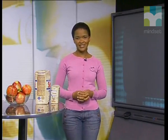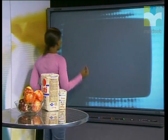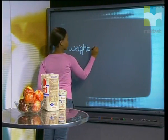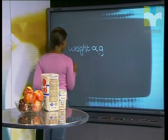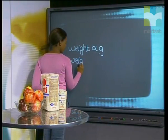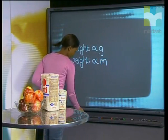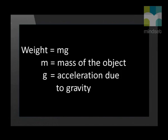We have found that weight and acceleration due to gravity are related — the greater the acceleration due to gravity, the greater the weight of an object. In fact, weight and gravitational acceleration are directly proportional. We also know that weight and mass are directly proportional. In physics, we represent this relationship in one equation: weight equals mass multiplied by g, the magnitude of gravitational acceleration.